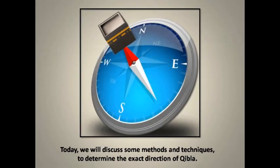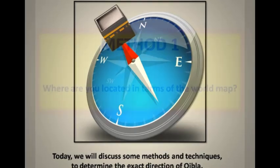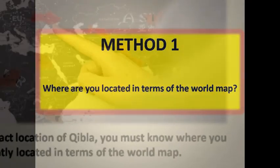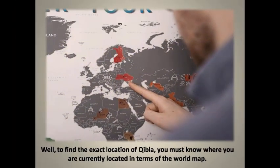Today we will discuss some methods and techniques to determine the exact direction of Qibla. Method number 1: where are you located in terms of the world map? To find the exact location of Qibla, you must know where you are currently located in terms of the world map.